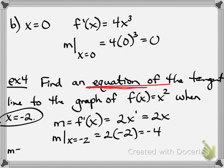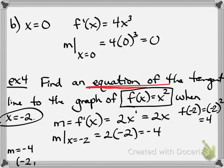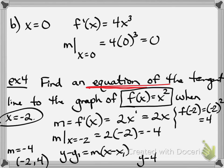Now it's algebra. We have a slope of negative 4 and need the point. Going back to the original function f(x) equals x squared, we know x is negative 2, so the y value is negative 2 squared, which is 4. Now we have the point (negative 2, 4) and slope negative 4. Using the point-slope formula — y minus y1 equals m times x minus x1 — we get our equation. You can solve for y to get it into y equals mx plus b form.